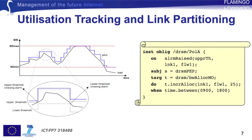A representative example of a dynamic resource management policy concerns the utilization tracking and link partitioning among traffic flows or LSPs to meet local performance targets. By tracking the utilization, the objective is to ensure that the allocated bandwidth is in accordance with the required bandwidth.